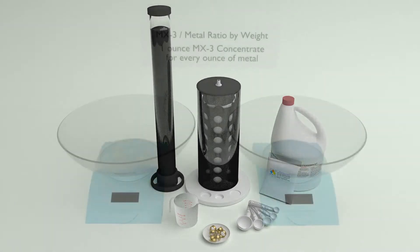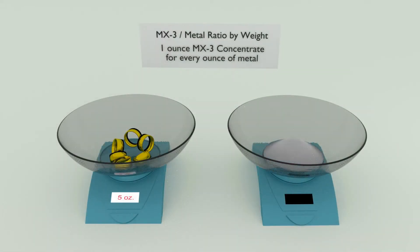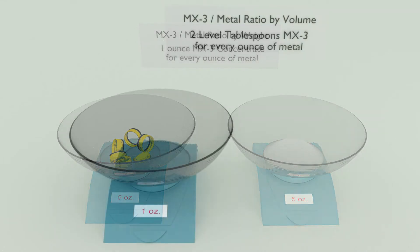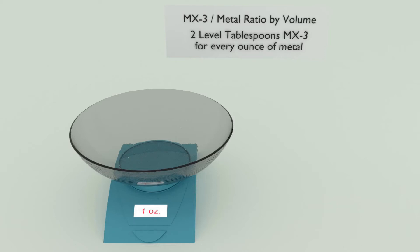Weigh your metal. Weigh an equal weight of MX3 concentrate. Whatever weight your metal is, you will be adding an equal weight of MX3 to dissolve that metal. If you prefer, you can measure the MX3 instead of weighing it. The ratio is 2 level tablespoons of MX3 for every ounce of metal.